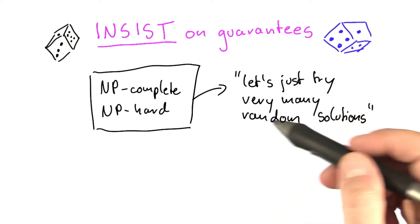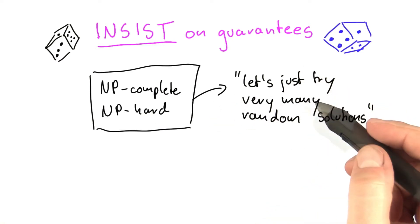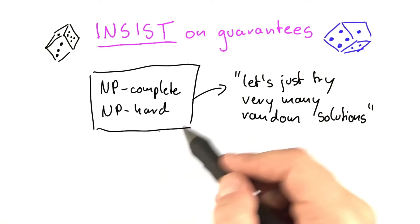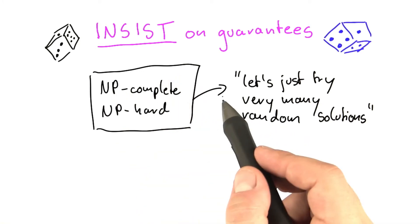Well, let's just try very, very many random solutions and pick the best one, which of course works better if you have an optimization problem than a decision problem.